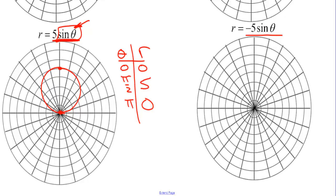For r equals negative 5 sine theta, we need to go down to 5 in the negative direction, and this would be the circle for negative 5 sine of theta.